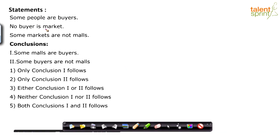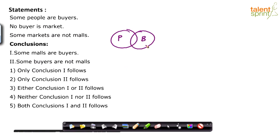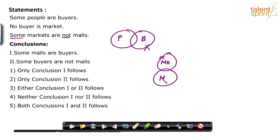Some people are buyers, no buyer is market, some markets are not malls — and only two conclusions are given to us. Some malls are buyers, and some buyers are not malls. Let us draw the basic diagram first. Some people are buyers — people, buyers. Next, no buyer is market, so these two will not touch each other. And some markets are not malls — this is market MK, and this is mall ML.